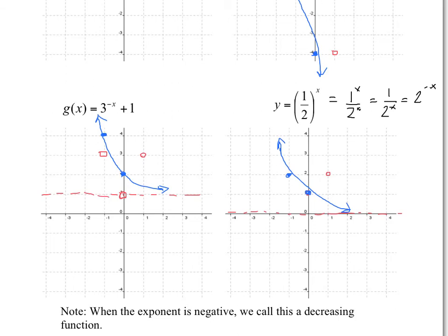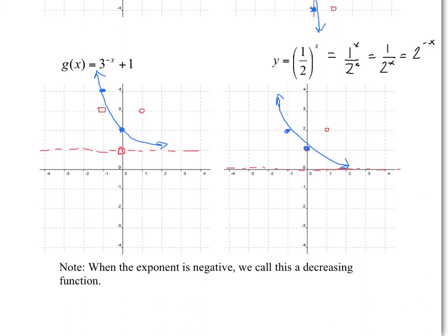Notice that we call these functions — and these two here — decreasing functions. Whenever your exponent is negative, you get a decreasing function. When the exponent is negative, moving from left to right, the function is always going down.